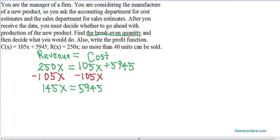Now, to get the x by itself, we have to get rid of that times 145 on the left side. We do that by dividing both sides by 145. So on the left side, the 145s cancel. On the right side, use your calculator to do 5945 divided by 145. You will get 41.